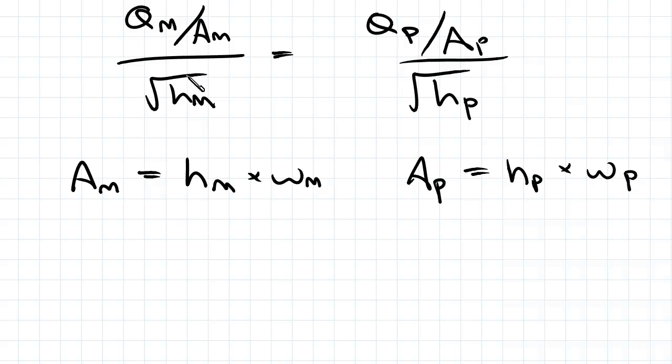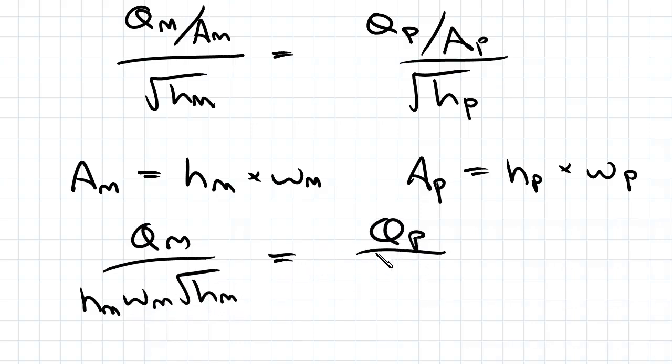If we substitute that in here and take that down, we'll get QM over HM WM square root of HM equals QP over HP WP square root of HP.